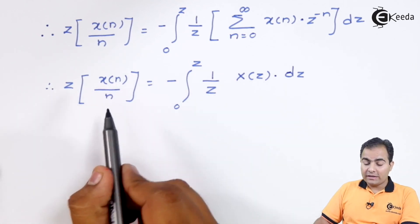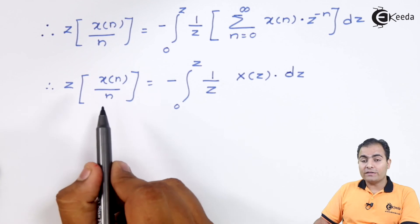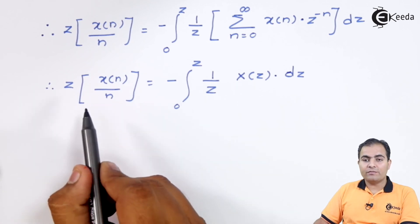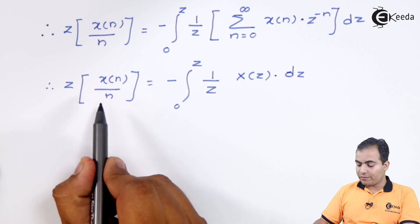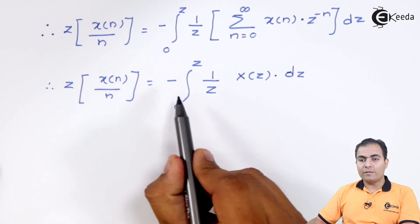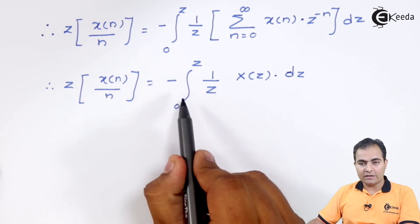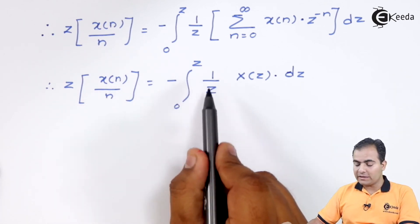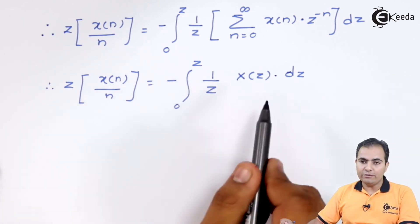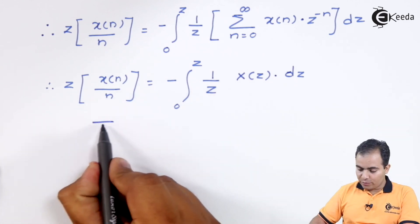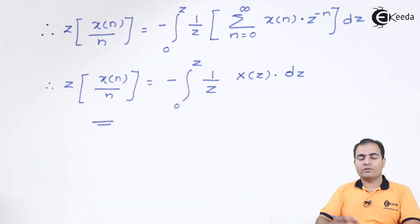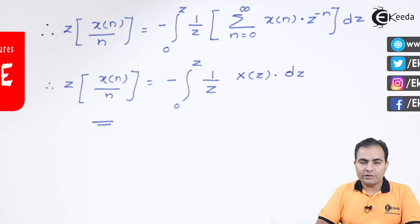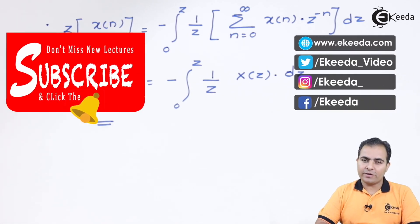As stated, the integration property is also referred to as division by N. So if we divide X(N) by N, the result will be minus the integral from 0 to Z of (1/Z) X(Z) dZ. This completes the proof of the integration property. Thank you for watching — stay tuned with Ikeda and subscribe. Thank you so much.